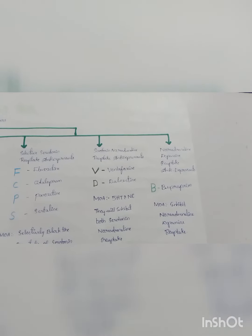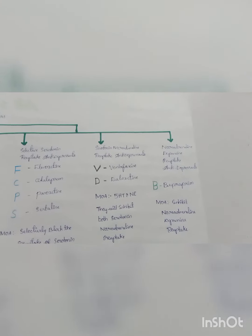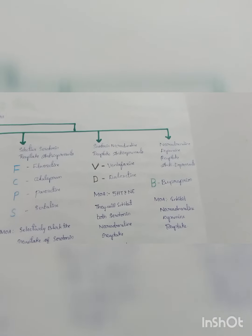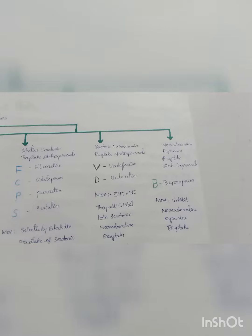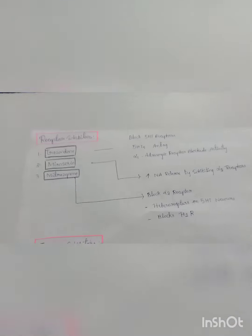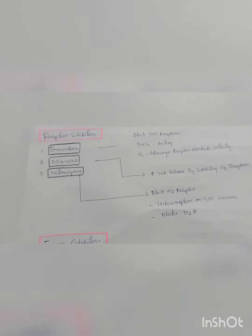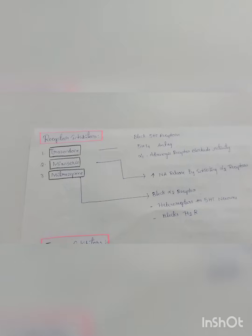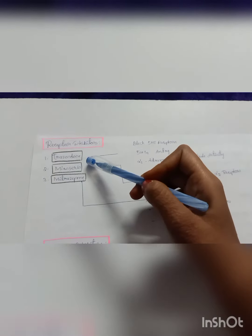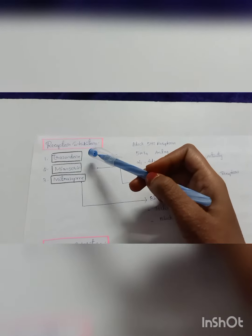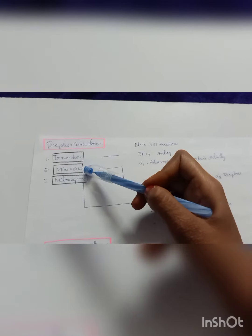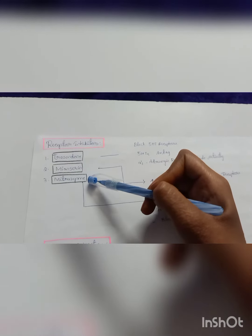Coming to the last reuptake inhibitor class — noradrenaline-dopamine reuptake antidepressants — we have one drug: bupropion. The mechanism of action is it inhibits noradrenaline and dopamine reuptake. Moving on to the second group, receptor inhibitors, we have three drugs: trazodone, mirtazapine, and mianserin.